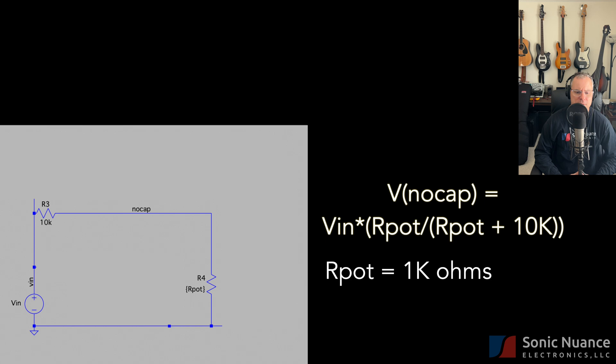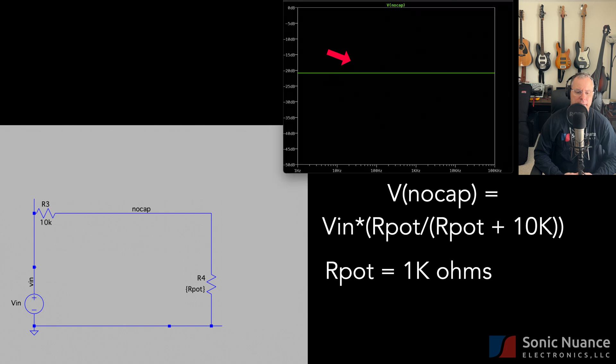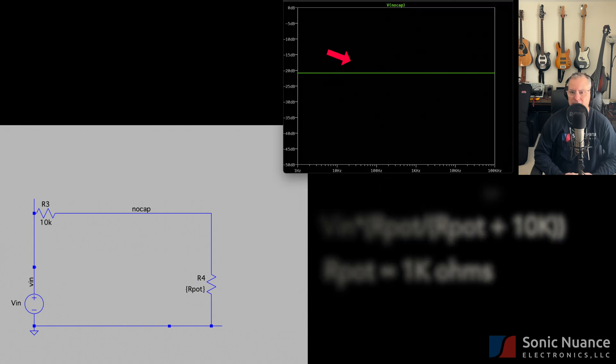You can look up the theory, but the output is the ratio of the resistance to ground R pot and the total resistance R pot plus 10k. The frequency response is shown here. Notice that it is flat again.